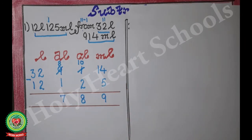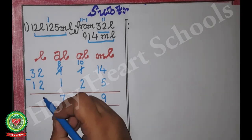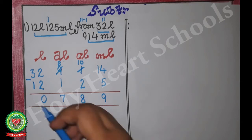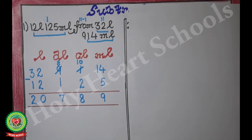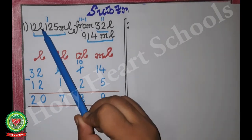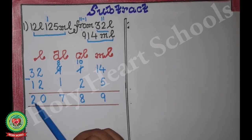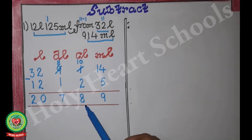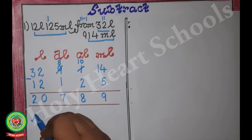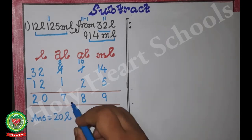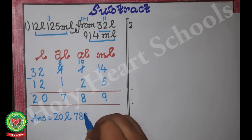2 minus 2 is 0, so we write 0. 3 minus 1 is 2, so we write 2. The sum was given in liters and milliliters, so the answer should also be in liters and milliliters. The answer is 20 liters and 789 milliliters.